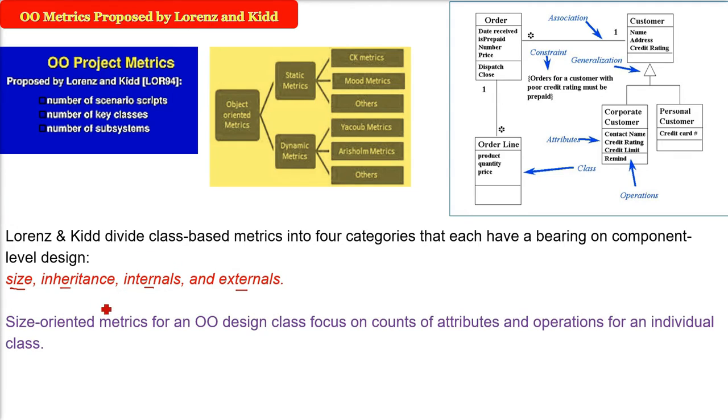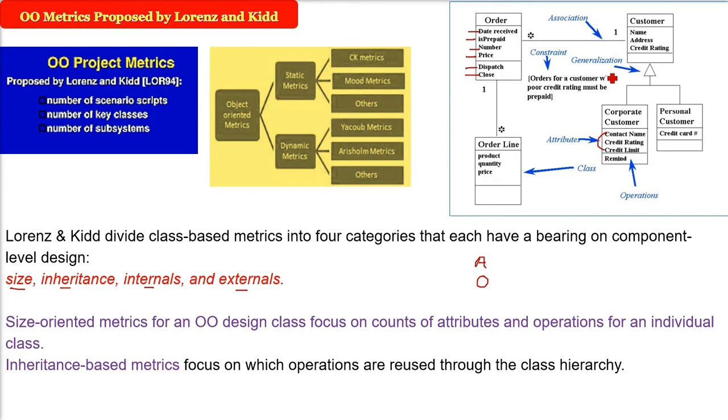What is size? The size oriented metrics proposed by Lorenz and Kidd for an object oriented design focus on counts of attributes and operations. So this is a class, these are the attributes and these are the functions operating on these attributes. So the counts of attributes and operations for an individual class, this is size oriented metrics.